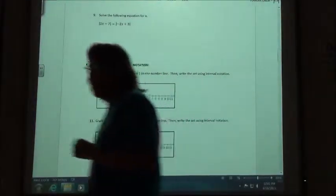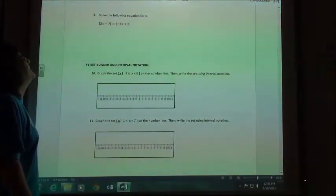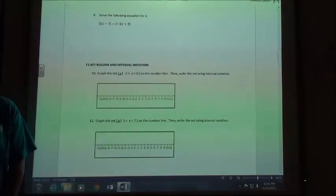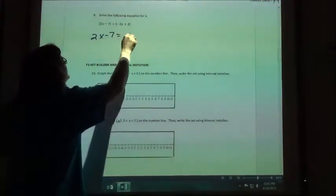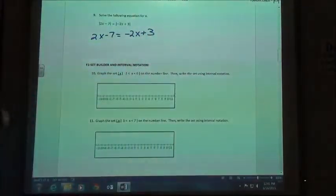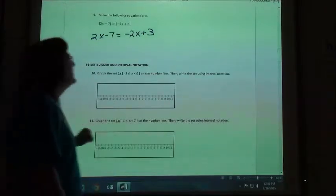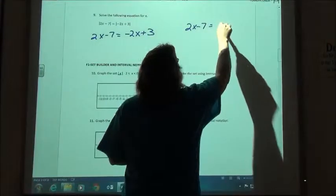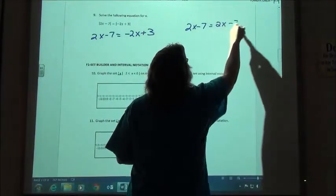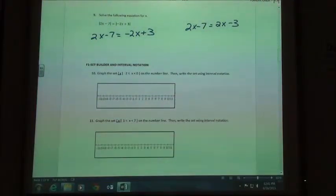So number 9, if I'm going to write down my two equations, my first equation would be 2x minus 7 equals negative 2x plus 3. My second equation would be 2x minus 7 equals a positive 2x minus 3.